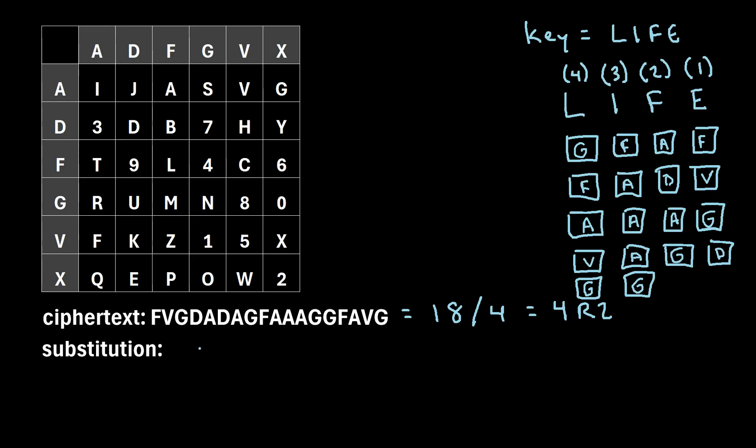The next step is we need to figure out what was our substitution text. So remember all we have to do to figure that out is just write these rows in order. So we'll write GFAF, and then we'll move to the next row and write FADV. And then we'll continue to write the rest of the rows.